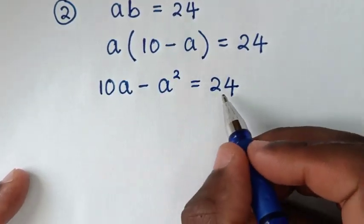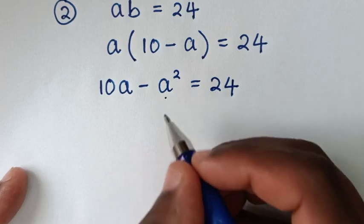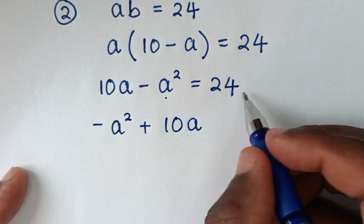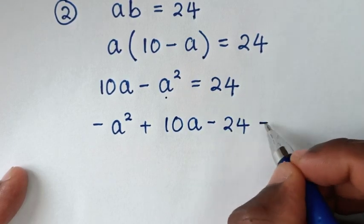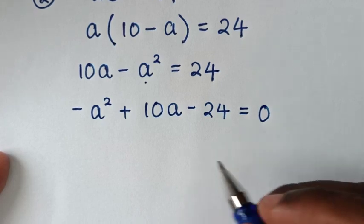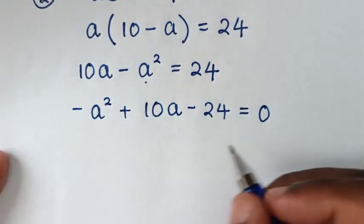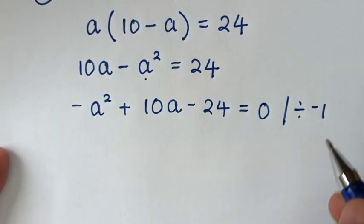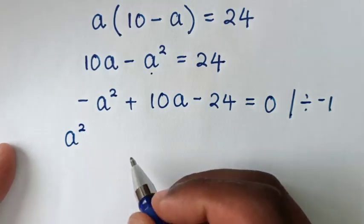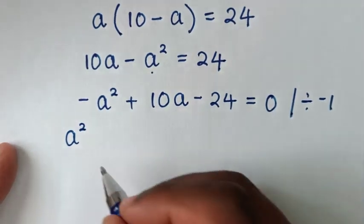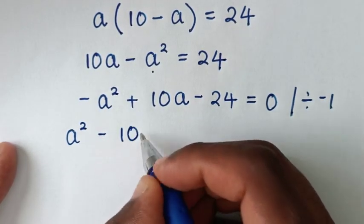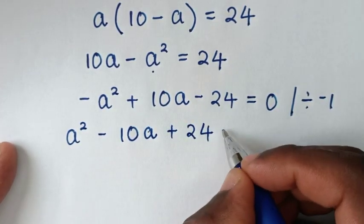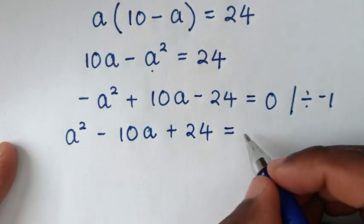Then, we'll take 24 to the left side, giving us negative a squared plus 10a minus 24 equals 0. To make a squared positive, we divide the whole equation by negative 1, giving us a squared minus 10a plus 24 equals 0.